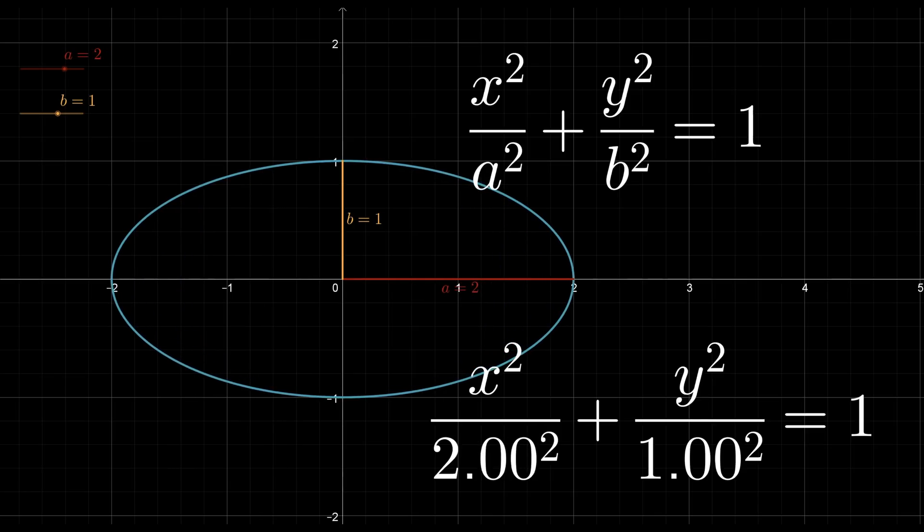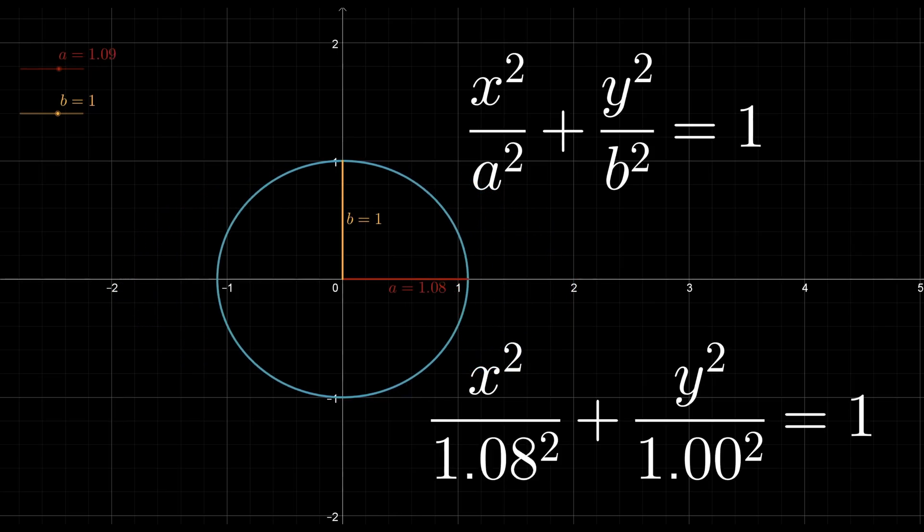Instead of a radius, we now have two different semi-axes a and b. This gives us a more generalized circle, the ellipse.